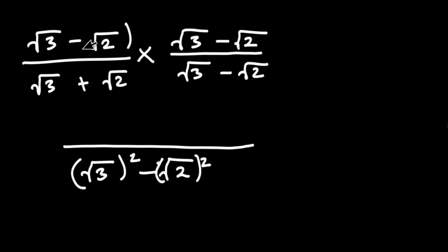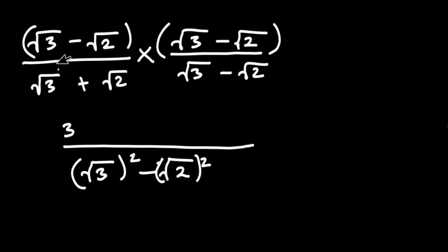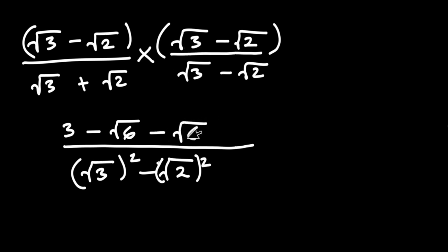Now let's multiply the numerator side using the FOIL method. We take each term and multiply across. Negative square root of 2 times square root of 3 gives negative square root of 6. Then negative square root of 2 times negative square root of 2 gives positive 2.